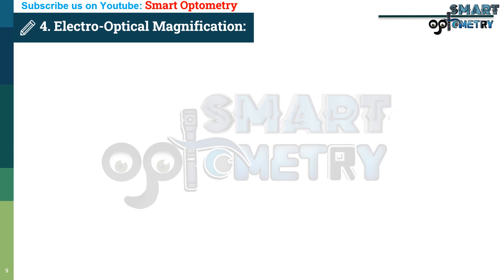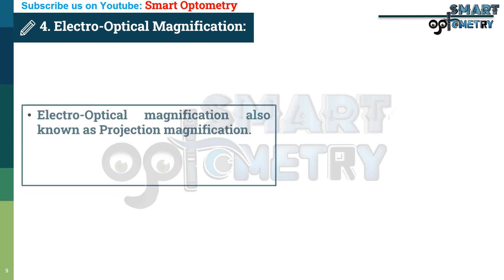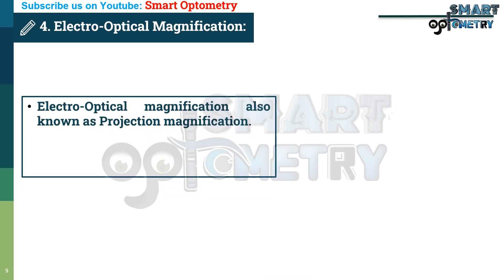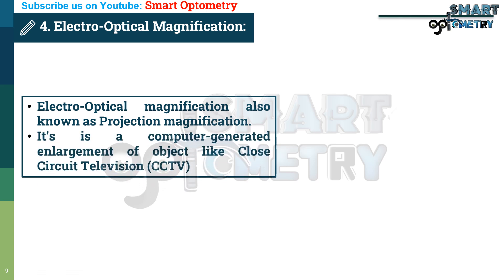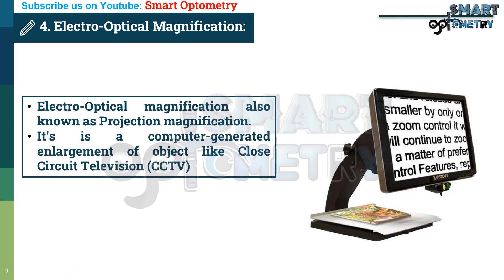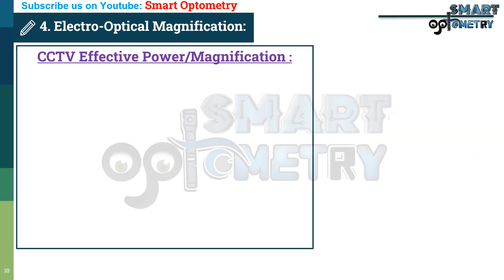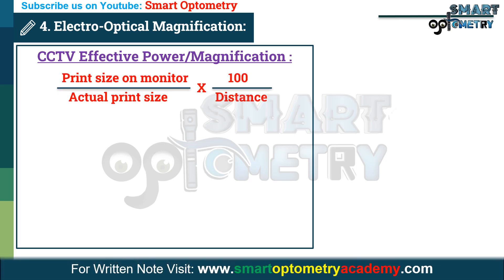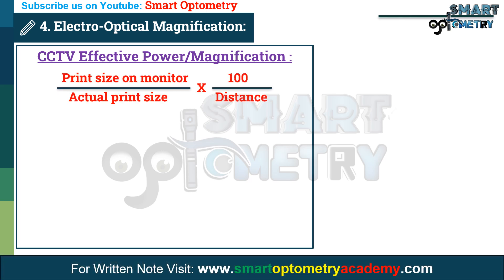Electro-optical magnification, also known as projection magnification, is a computer-generated enlargement of objects, such as closed-circuit television (CCTV). The formula for CCTV effective power or magnification is: print size on the monitor divided by actual print size, multiplied by 100 divided by distance. All measurements are in centimeters.